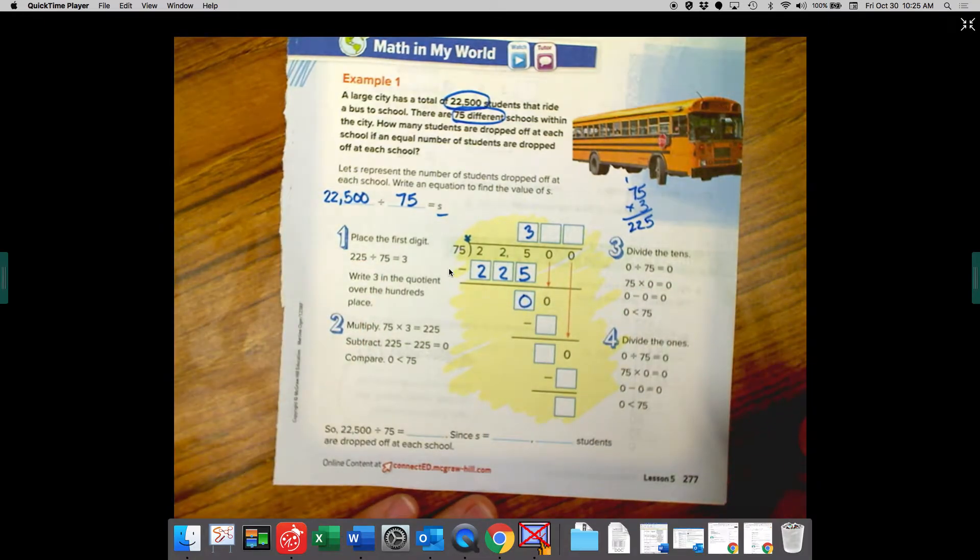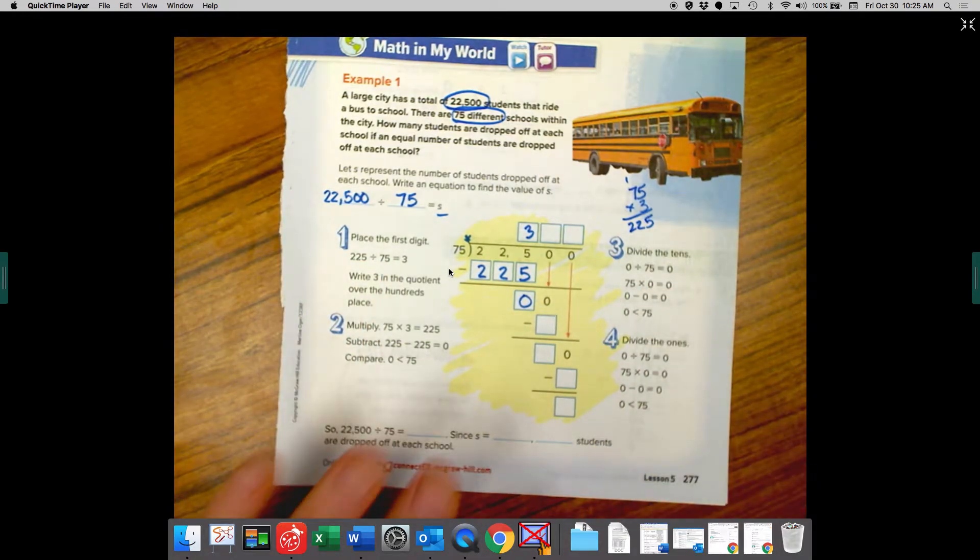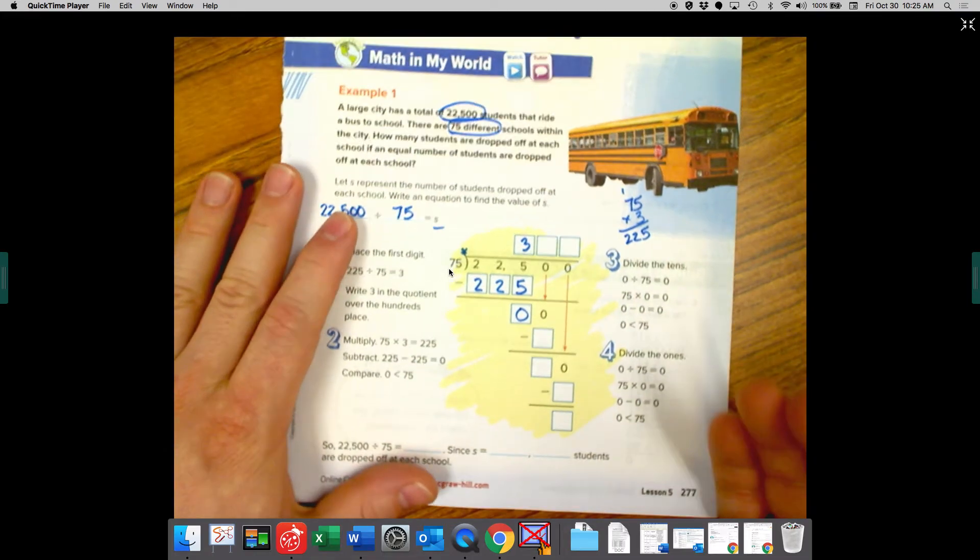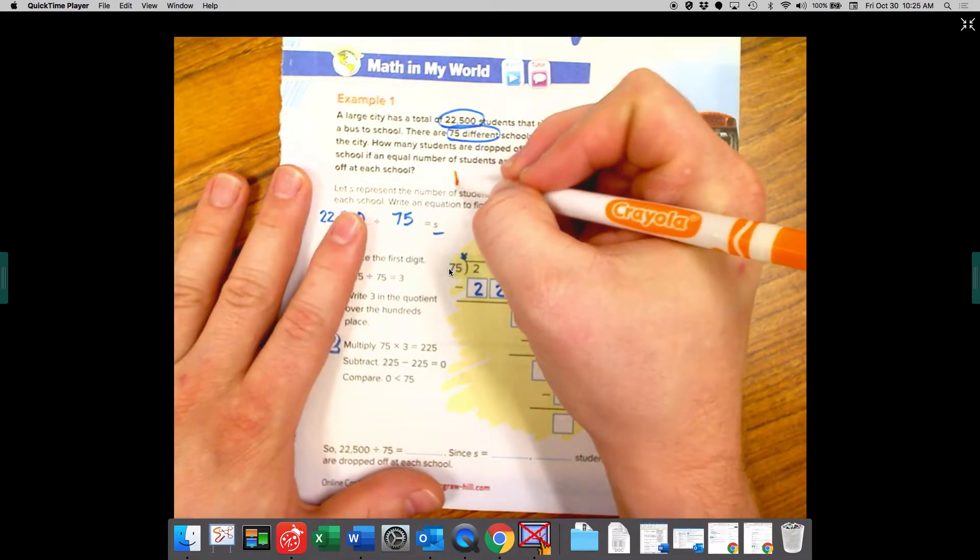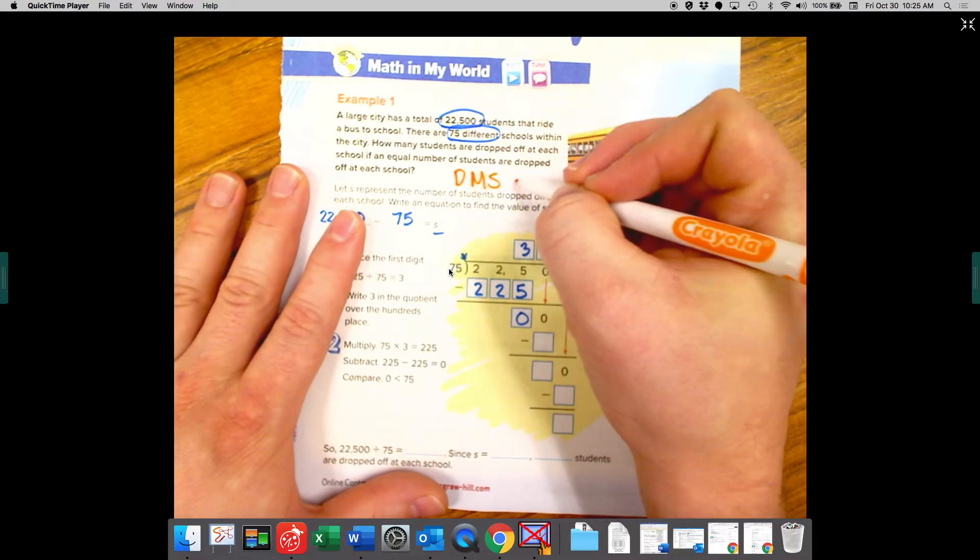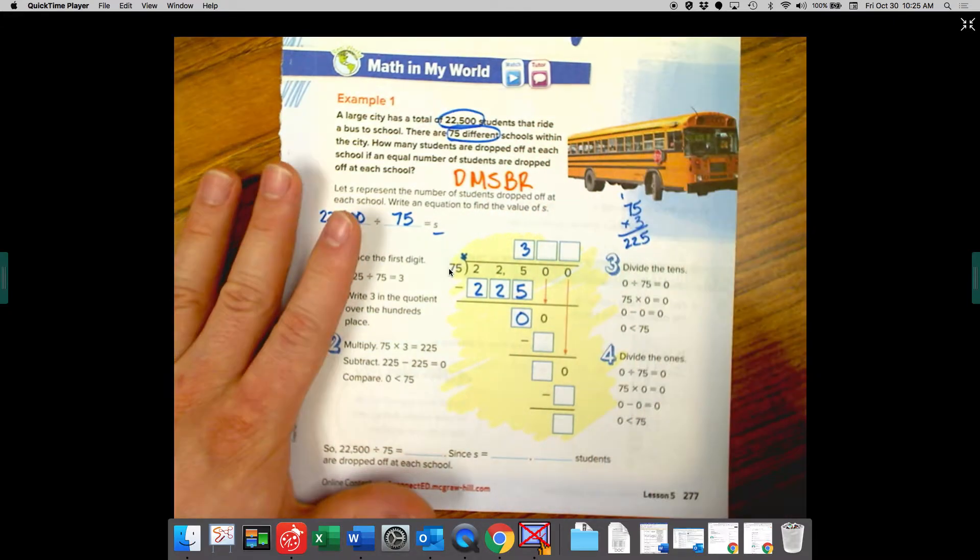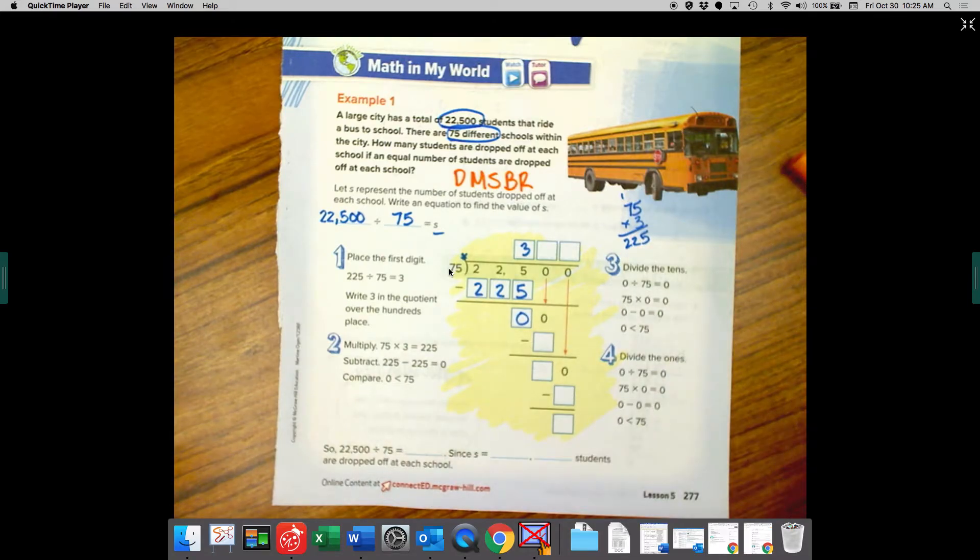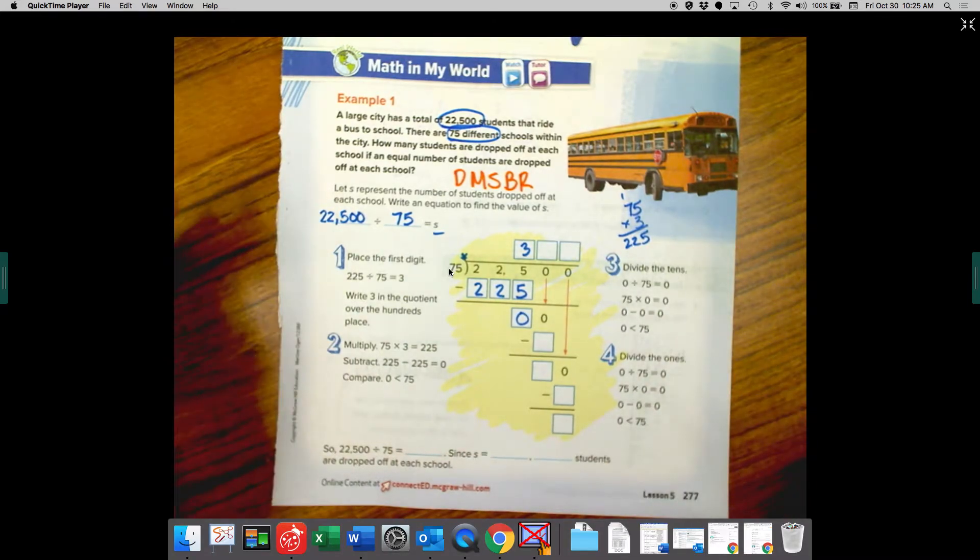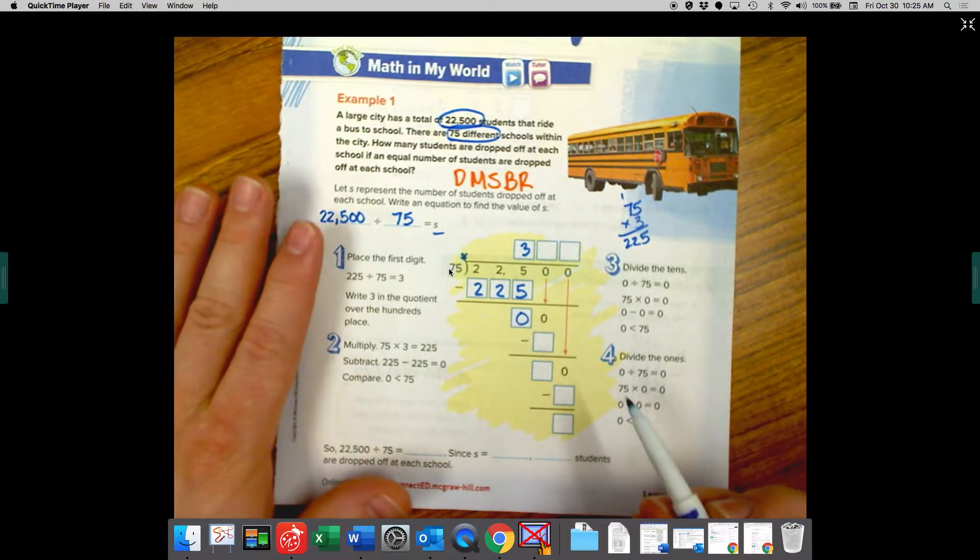We're left with 0. Now we have to make sure that when we do problems like this, it might look like the work is kind of done. We have to follow does McDonald's sell burgers raw. If we stop doing those steps, we won't get the right answer. We can't just say the answer is 3. We still have more work to do.